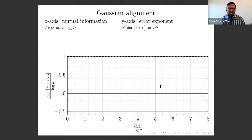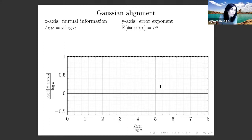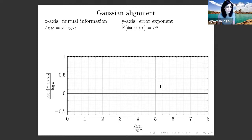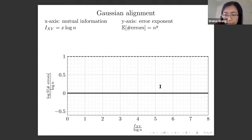A question: do all results assume databases have the same set of users or just the same number? The equal-size assumption is made for simplicity. When sizes differ, the error event analysis changes — equal-size errors involve only cycles, while unequal sizes also require analyzing paths. The analysis becomes more cumbersome but the approach is similar.